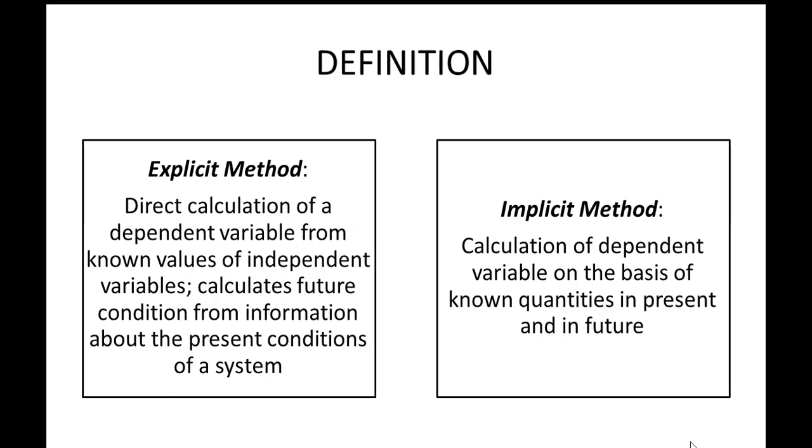Let's first start with the definition. What is the explicit method? Explicit method is the easier one. From the directly known values of an independent variable or a set of independent variables, you are able to calculate how the dependent variable will output over a certain phase of time. This simply means that I know what is happening presently with my system of study and using those results I can predict what is going to happen in the future.